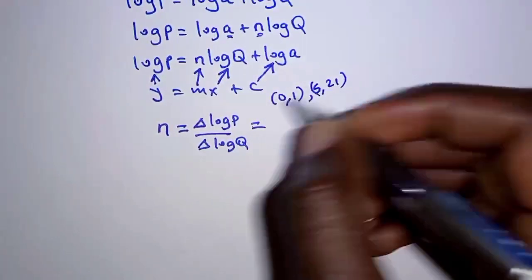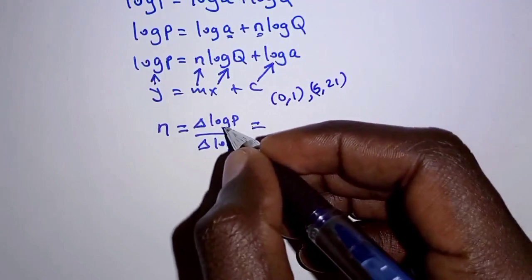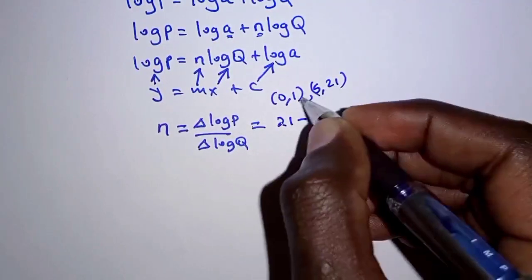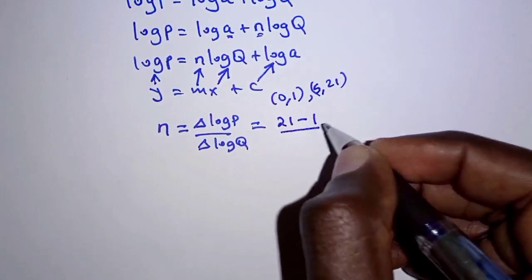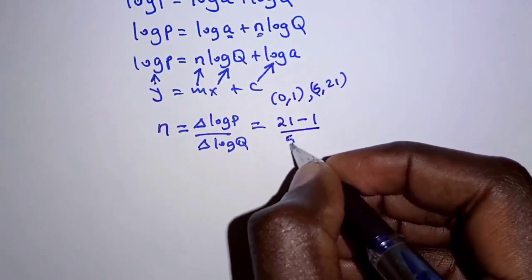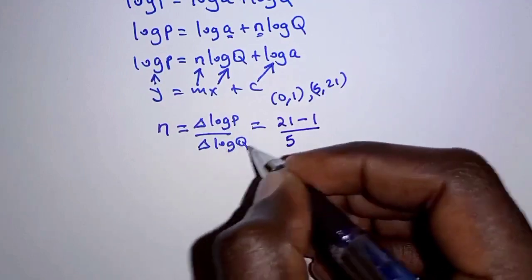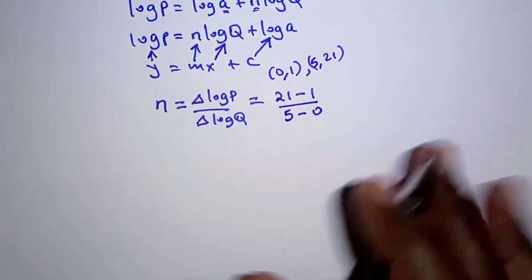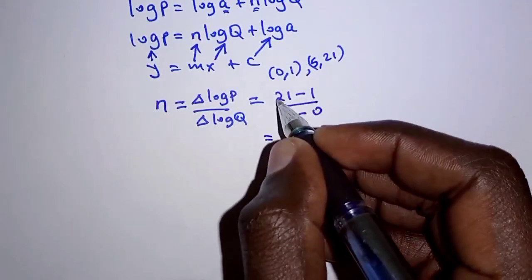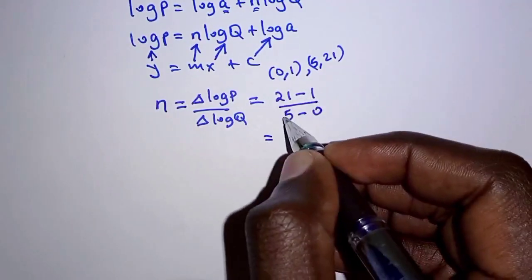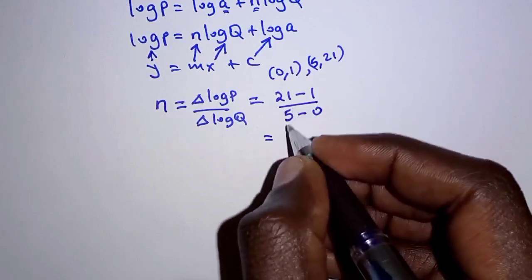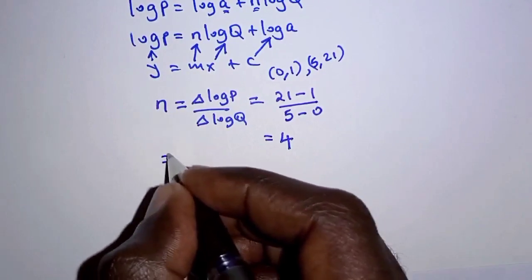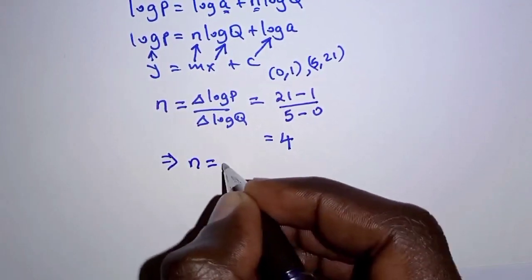So using these two points to calculate the gradient, we'll have change in log P as 21 minus 1 over change in log Q which is 5 minus 0. So this worked out, in the numerator we have 20, denominator we have 5. So 20 divided by 5 that is 4. So that implies that N is equal to 4.